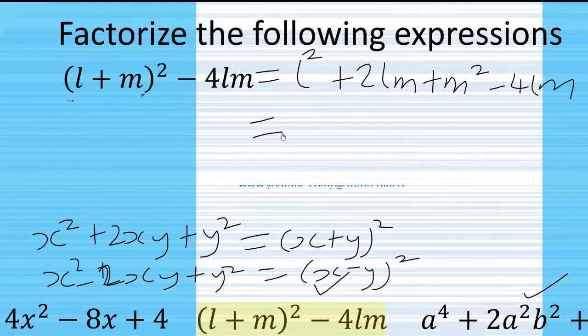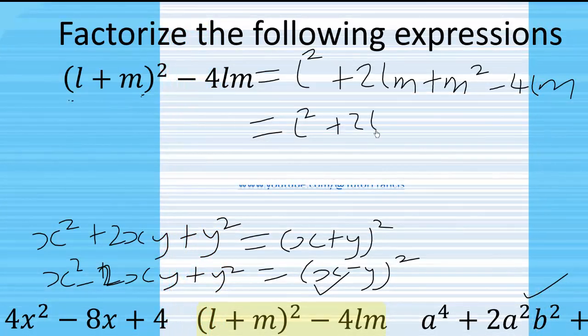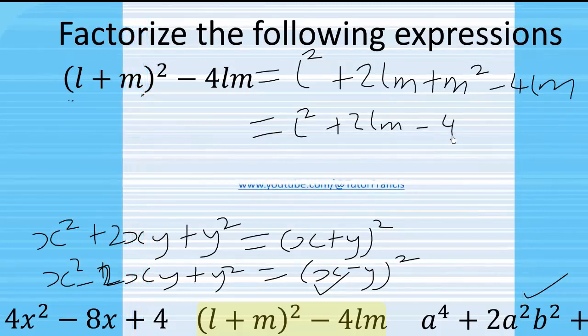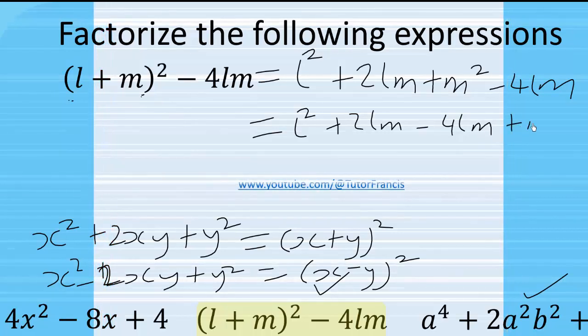This will be equal to l² + 2lm minus 4lm, then plus m². We group the like terms.